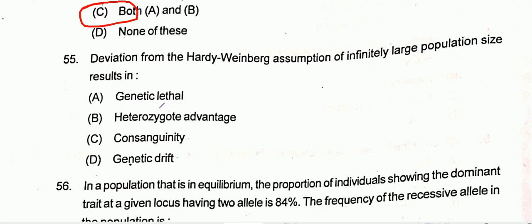Question number 55: Deviation from the Hardy-Weinberg assumption of infinitely large population size results in — according to the options, both option C and option D could be correct, but the most appropriate one would be option C.